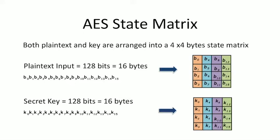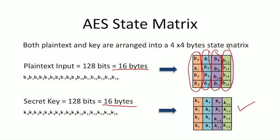To understand the AES algorithm, we refer to the plaintext block as well as the key block as a 4×4 byte matrix known as the state. A 128-bit plaintext block is essentially 16 bytes, and similarly for a 128-bit key. These bytes are arranged column by column to form the state matrix — the first four bytes go into the first column, the next four into the second column, and so on. The same arrangement applies to the key.